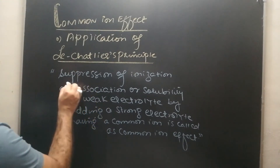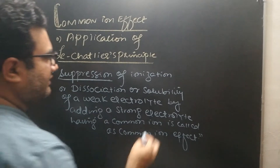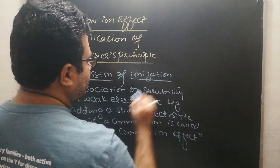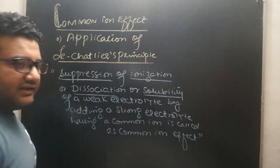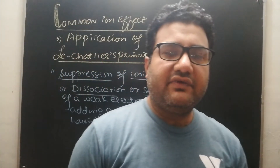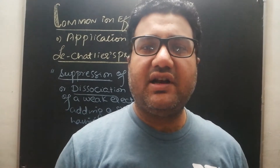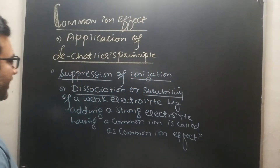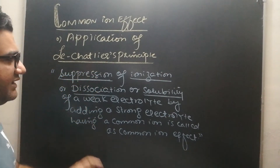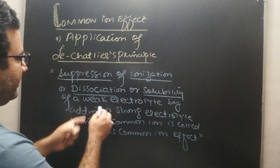Suppression means a decrease — a decrease in ionization, dissociation, or solubility. These three words have the same meaning when dealing with electrolytes. Ionization is also called dissociation, and both are related to the solubility of the electrolyte. Suppression of ionization takes place for the weak electrolyte.